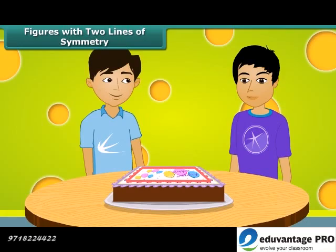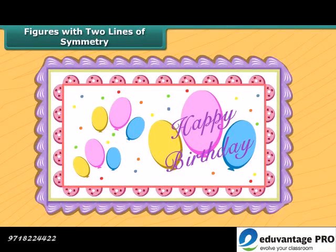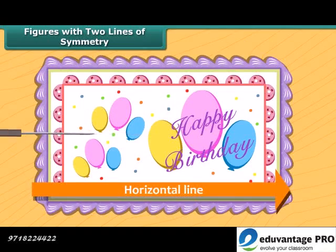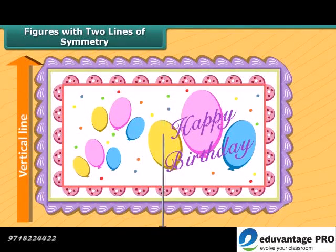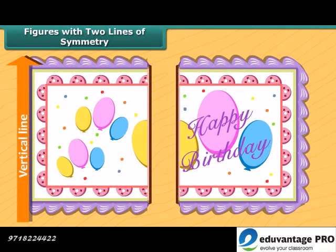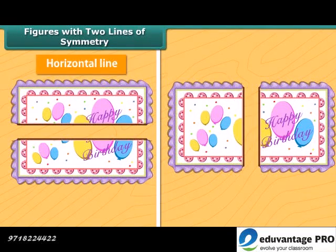Manu and Mrinal have one rectangular cake. Each of them want exact half of it. The cake can be divided in two ways to give equal halves. Do you want to know how? Let us find out. The cake can be divided along the horizontal line so that its two halves match each other. It can also be divided along the vertical line. So the cake has two lines of symmetry along which it can be divided to give two identical halves. Thus we can say that a rectangle has two lines of symmetry.